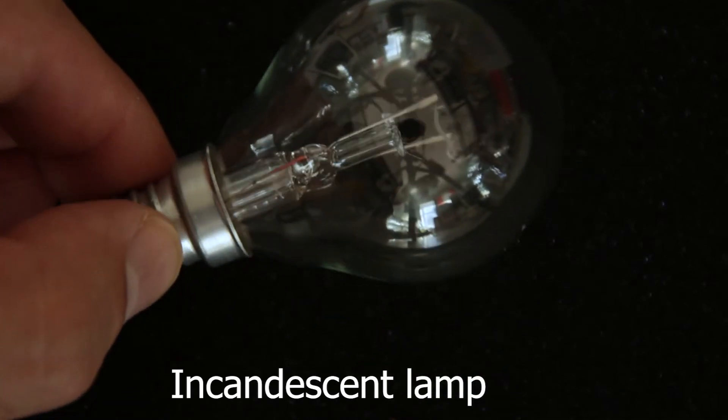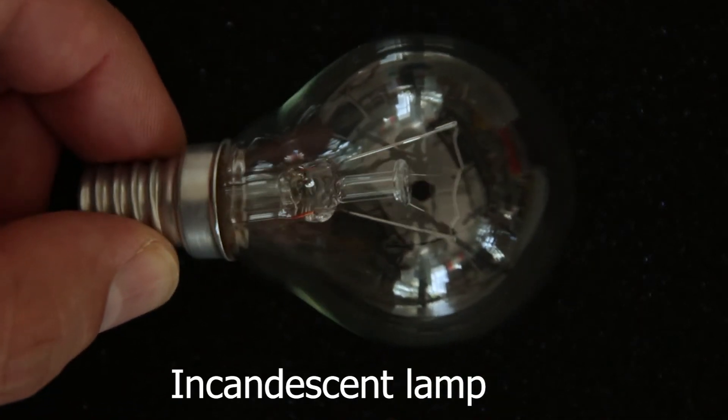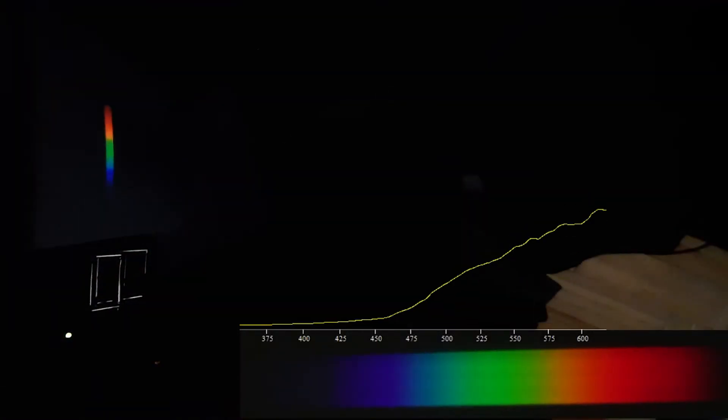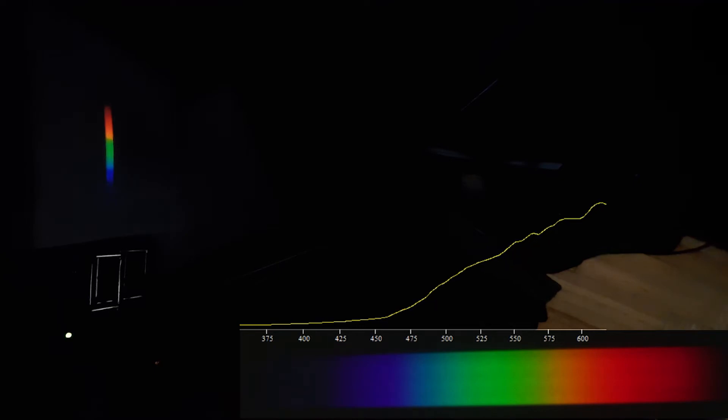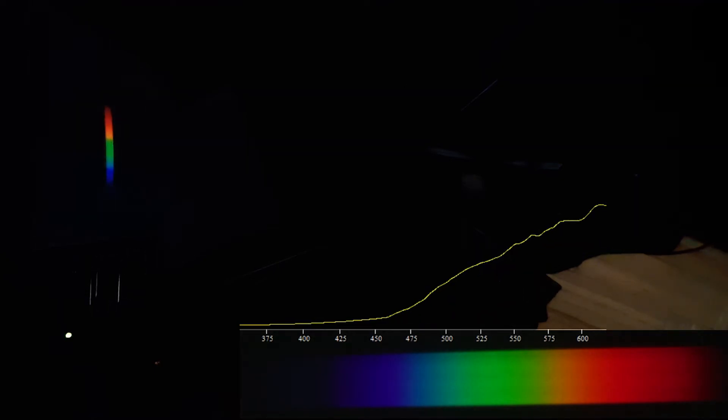Let's start with something simple. Here is a spectrum of incandescent lamp. It has continuous nature with smooth transition from blue to red. We can notice this spectrum is lacking blue intensities in comparison to red ones. That is why we perceive this light as warm.